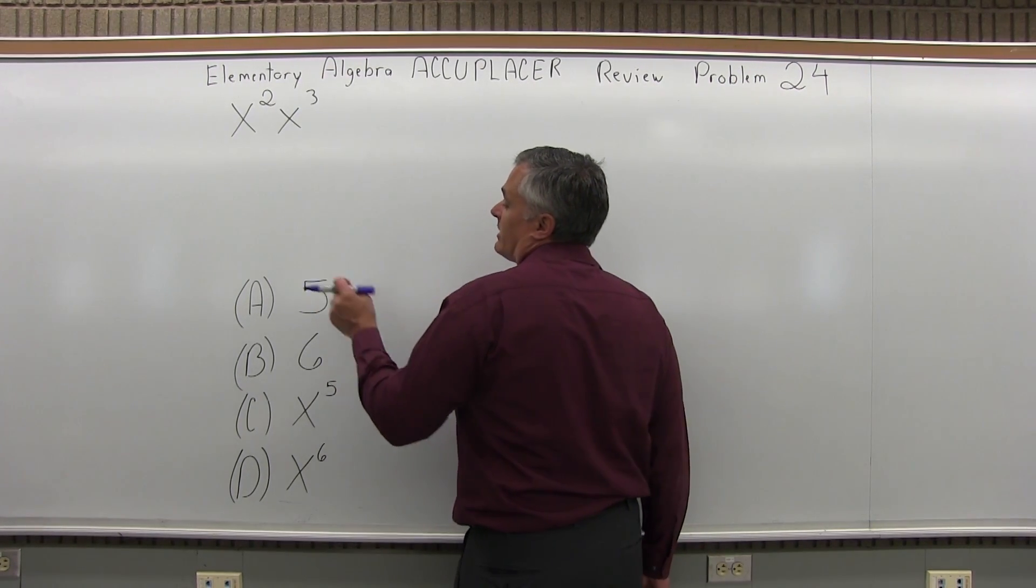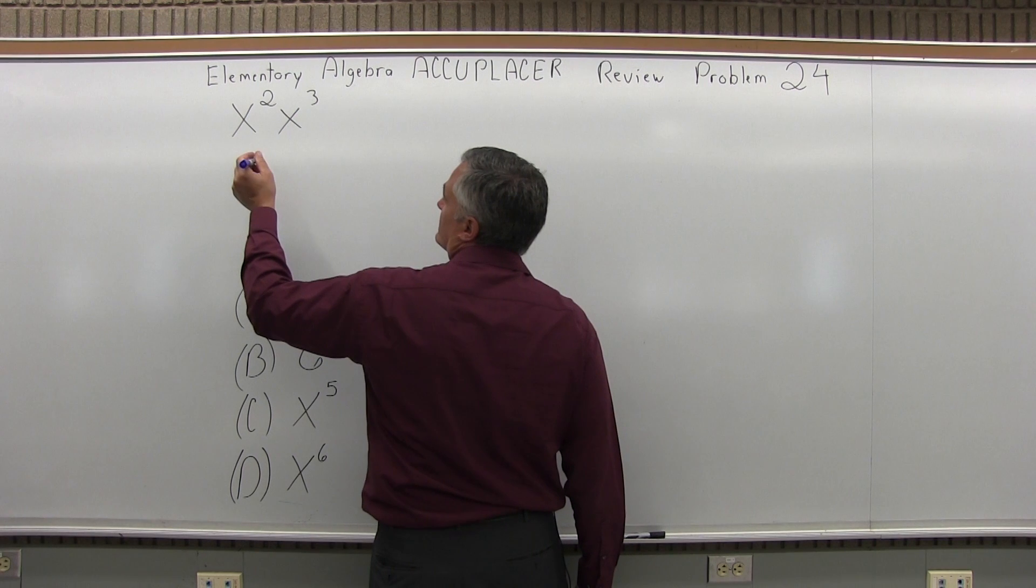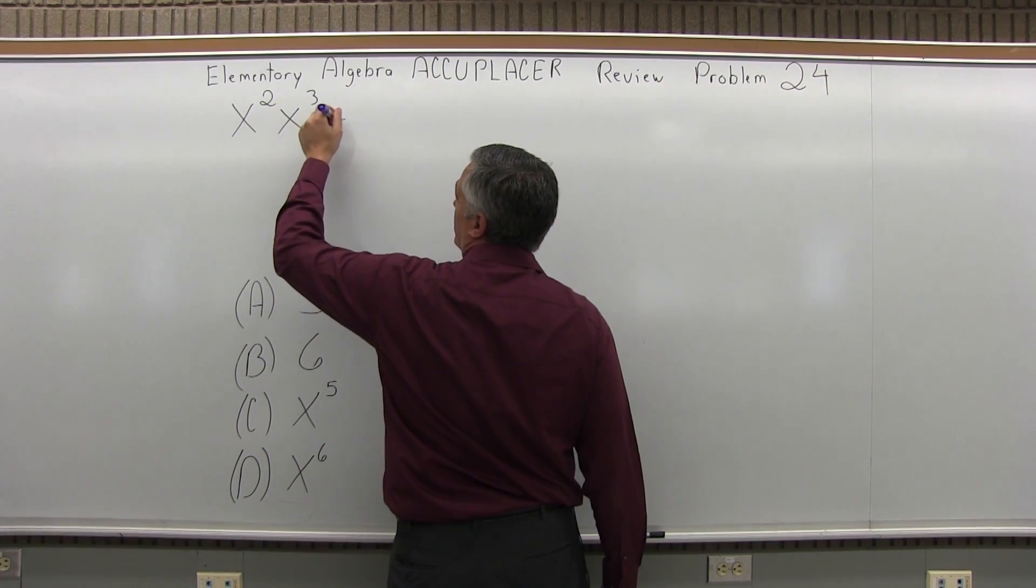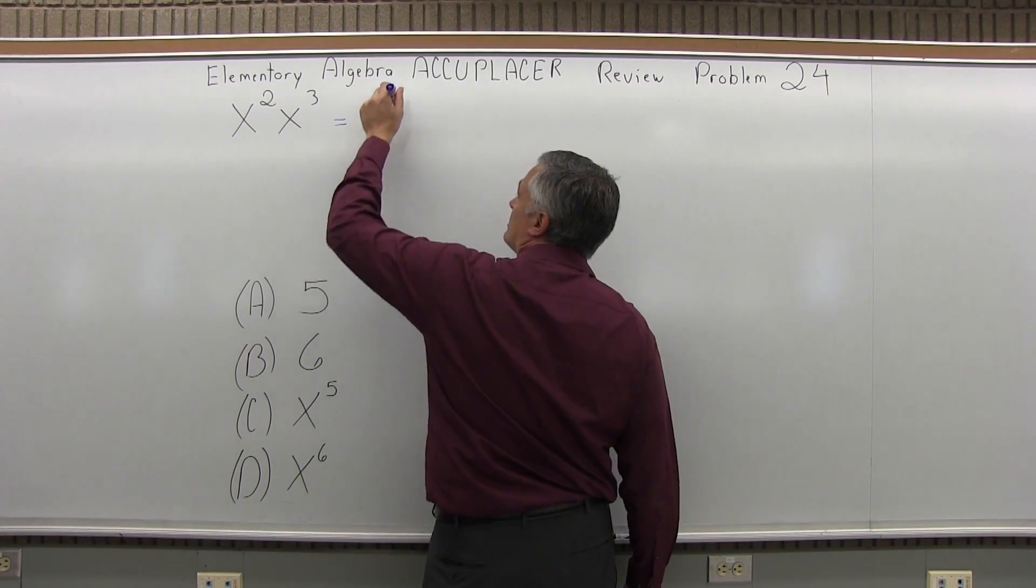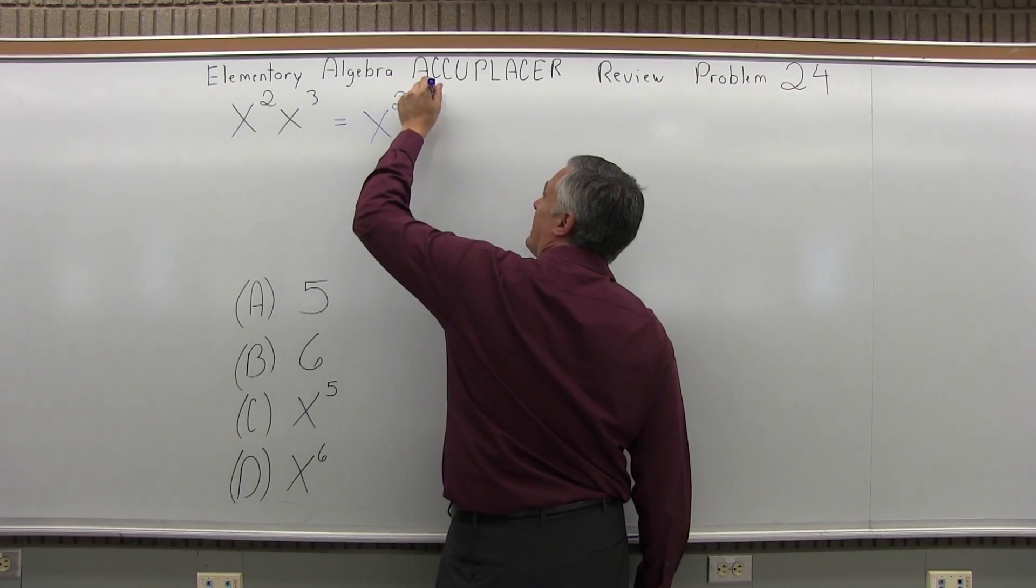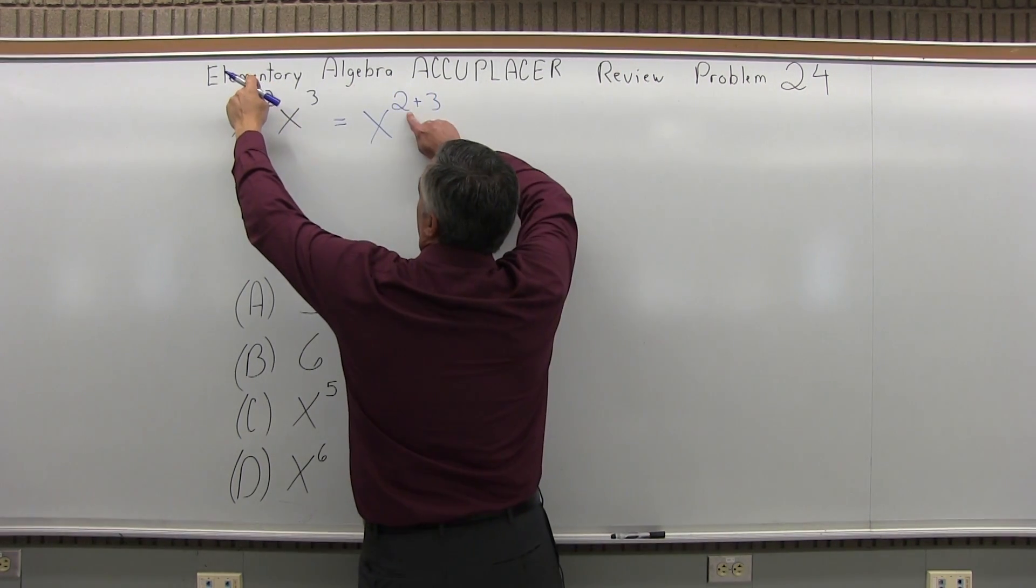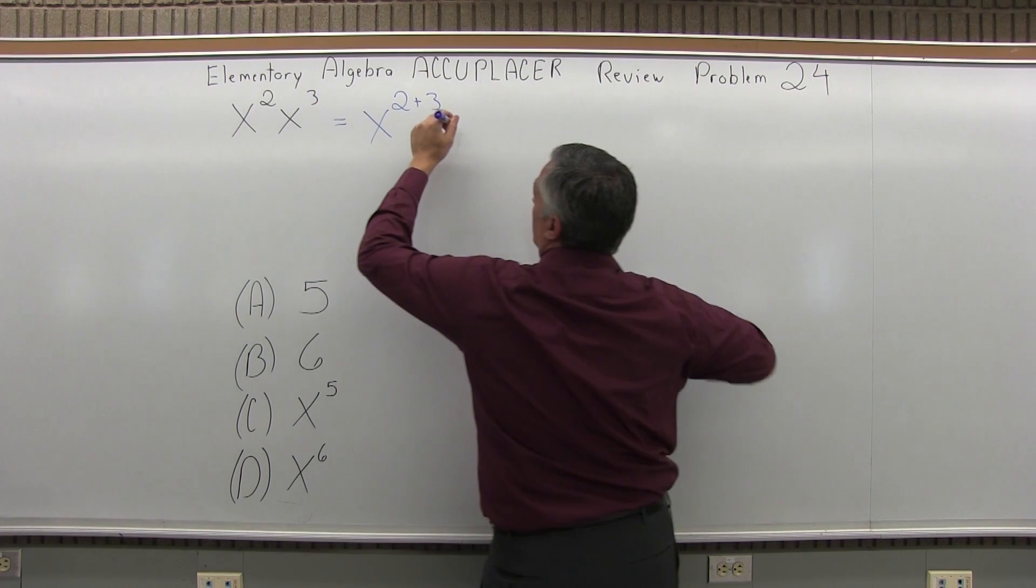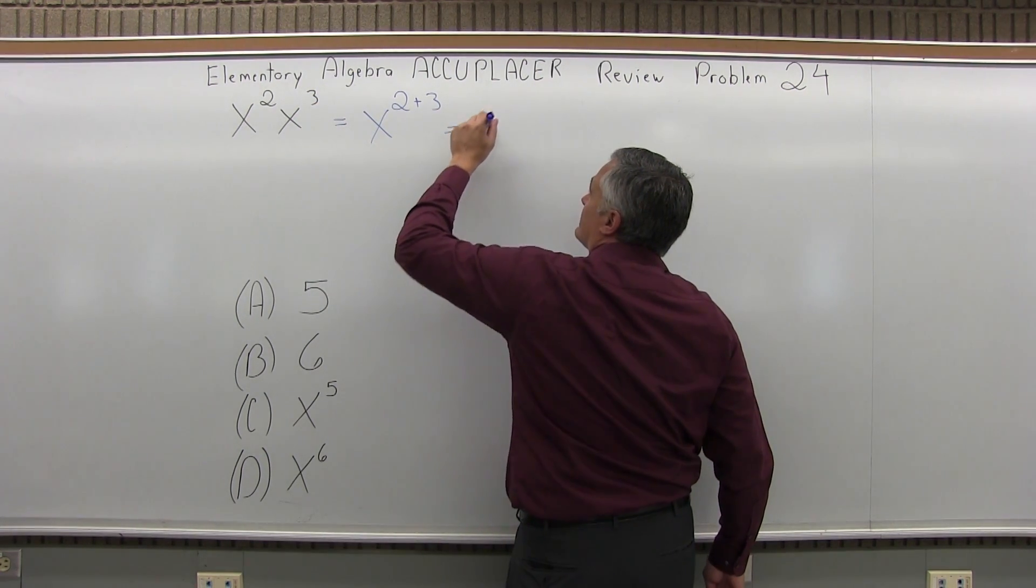And they don't tell you what x is. They want you to simplify it, and when you multiply two things with the same base, what you're supposed to do is add the exponents. So second power plus third power would equal x to the fifth power.